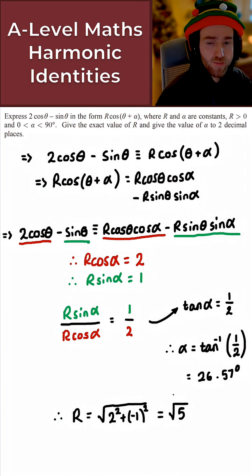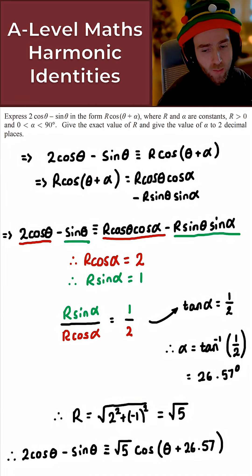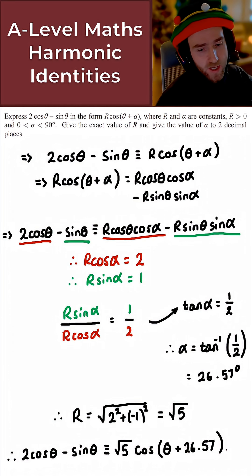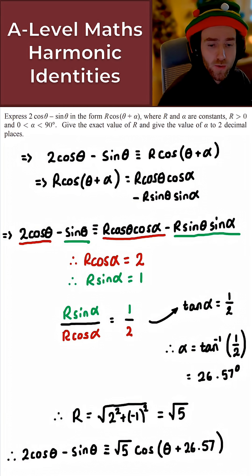So to finish with then, let's just put all of this together here. Putting this all together. Then what we get here is 2 cos theta minus sine theta is identical to root 5 cos theta plus 26.57. And there we go then. Nice and easy. That gives us the solution to today's question.